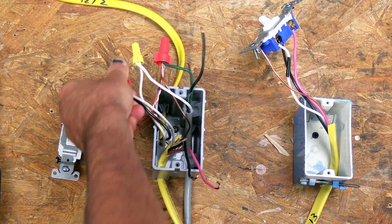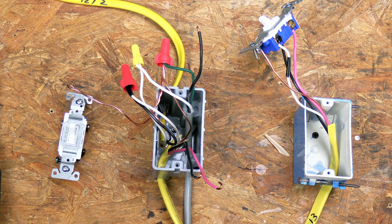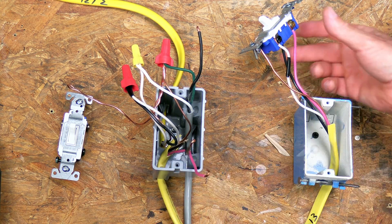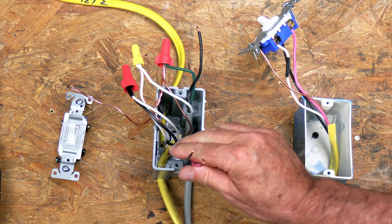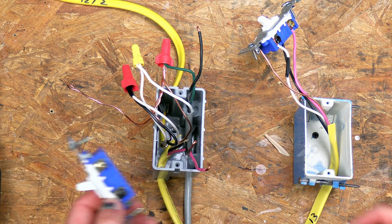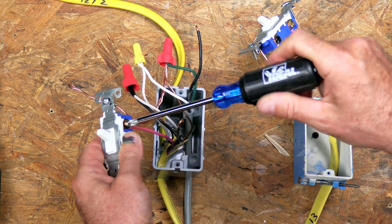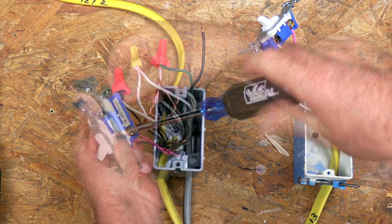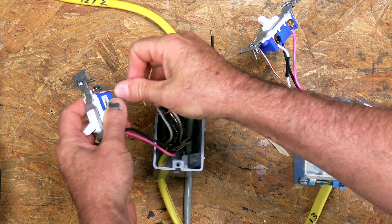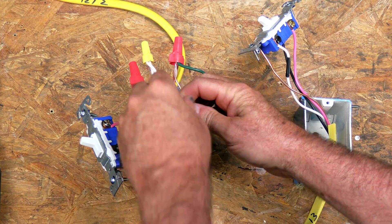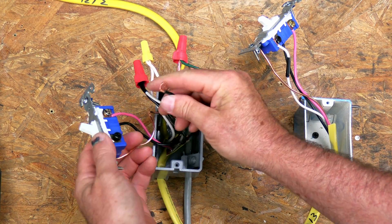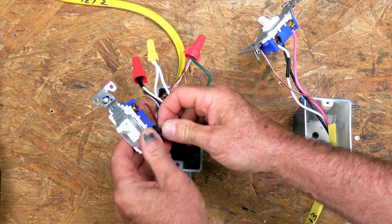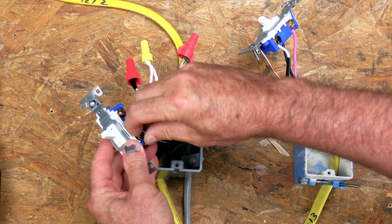And we'll go ahead and add a wire nut. Now normally you would stuff all these inside the box, but I'm just going to leave them out so you can see them. Now these two are our travelers. On the other switch, we've got those hooked to the travelers. We're going to hook those to the travelers on the new switch. Hook the ground back up. And here's our power coming from the fuse panel, from the wall. And that goes straight to the black screw or the common screw on our three-way switch.